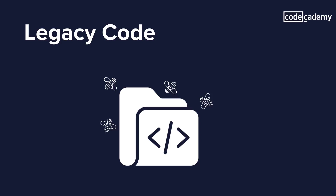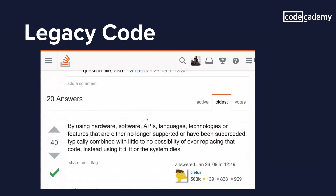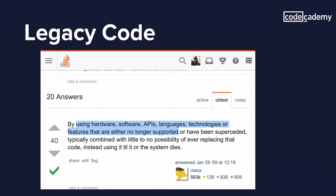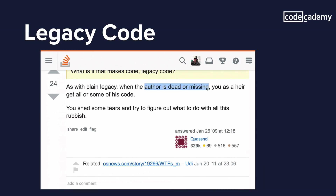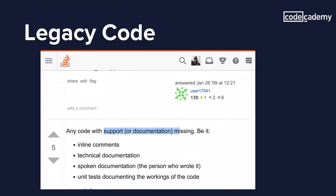One of the best places to find different definitions being used is Stack Overflow, a forum where you can ask questions about programming topics. On there, the question 'What makes code legacy?' surfaces answers like: code that uses hardware or APIs that are no longer supported, code where the author is dead or missing, code that's no longer supported or manufactured, or code that doesn't have support or documentation. There are a lot of definitions that members of the industry have upvoted.